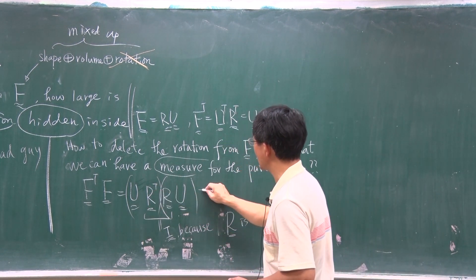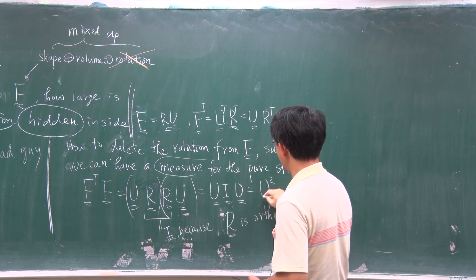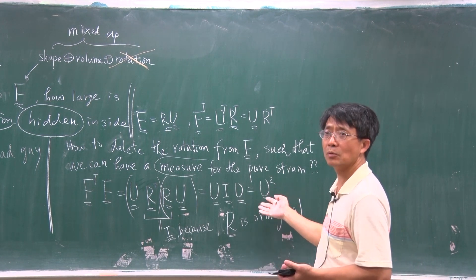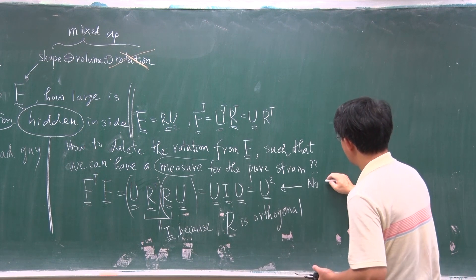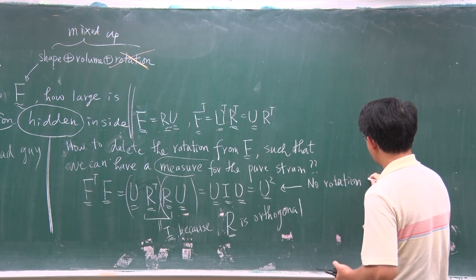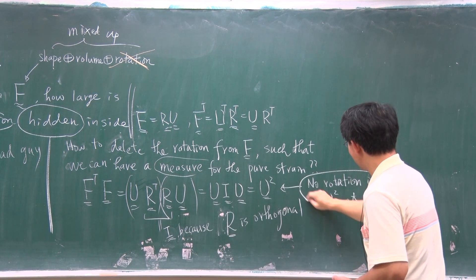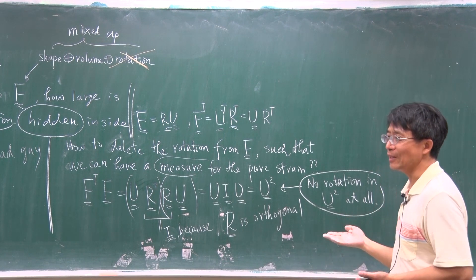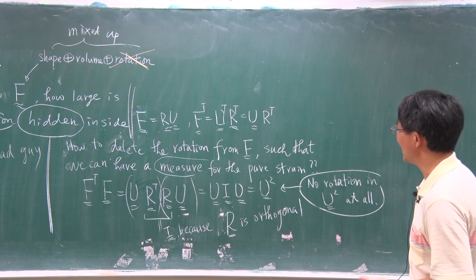Since R-transpose times R is the identity matrix, we have F-transpose times F equals U times I times U, which gives U squared. So this tells us that U squared is the matrix which has no rotation at all. U squared is a quantity which contains no rigid body rotation at all. So this is the measure we want to have.